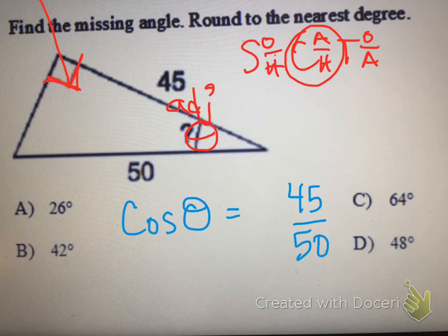And now we need to get theta by itself. We need to get rid of the cosine. To cancel out addition, we subtract. To cancel out squaring, we square root. To cancel out cosine, we do the second cosine, which looks like this on our calculator.